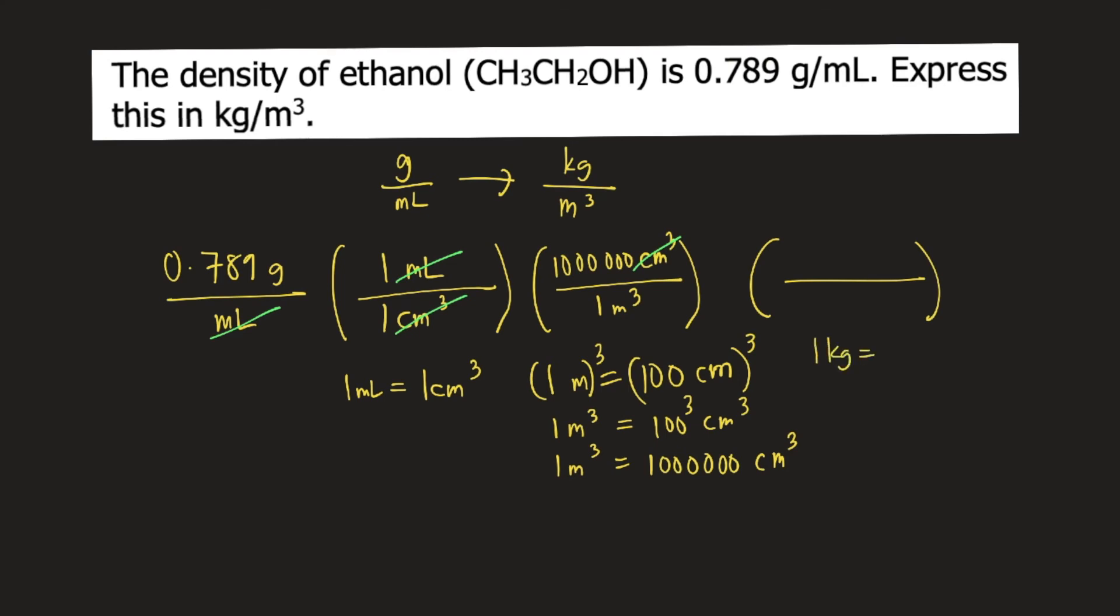1 kg is equal to 1,000 grams. So we put 1,000 grams here at the bottom and 1 kg on top so that the grams will cancel. And we are left with kilogram on top and then 1 meter cubed at the bottom.